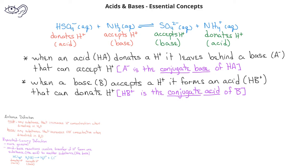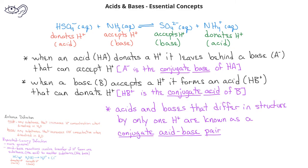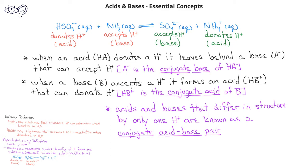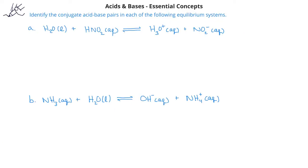Any acids and bases that differ by only one hydrogen ion are known as a conjugate acid-base pair. In this problem, we're asked to identify the conjugate acid-base pairs in each of the following equilibrium systems.